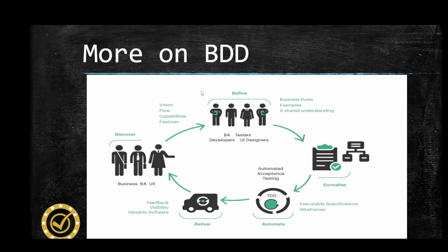In the discovery phase you also define business rules. You then have the formulation phase, where you start writing scenarios using the given-when-then structure, also known as the Gherkin syntax, to describe the behavior of features. Once you've formulated your scenarios, you enter the automation phase, where you start automating scenarios with executable tests to ensure that the behavior has been implemented correctly.